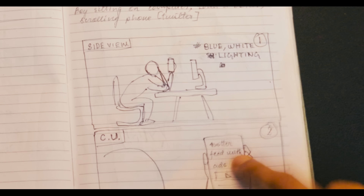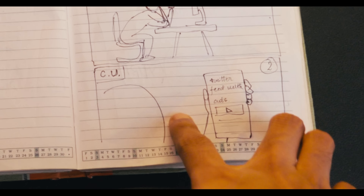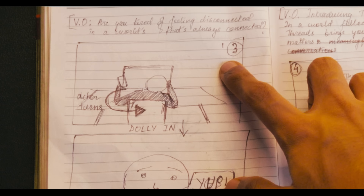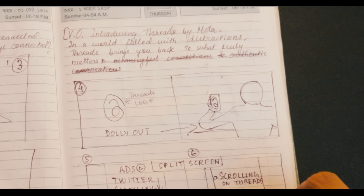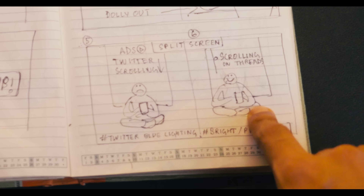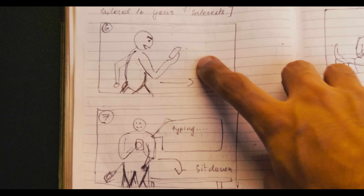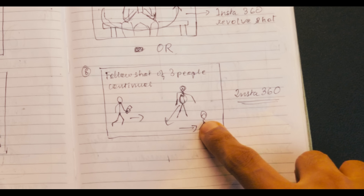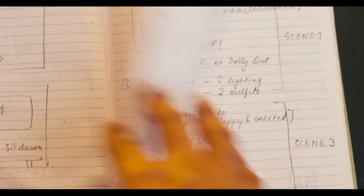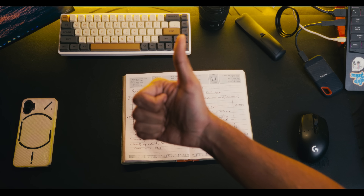The concept is very simple. The protagonist is miserable in the beginning and he is pointlessly scrolling through his phone. Then he finds Threads and his life basically changes. He connects with like-minded individuals and makes meaningful connections. He starts to find social media interesting again and we are going to add a voiceover to make it more clear. Now that the planning was done, it was time to start the challenge. We are in the studio, about to head out to our first location.